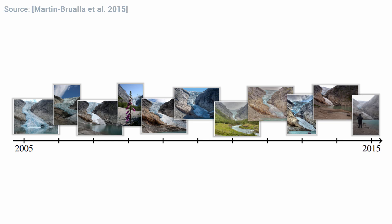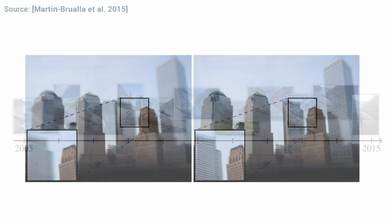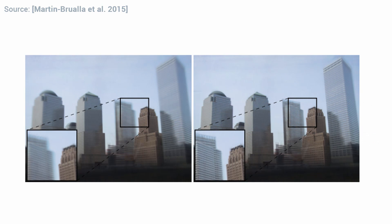Moreover, since these images are taken by cameras, different regions of the image may be in focus and out of focus. The algorithm therefore would have to somehow equalize all of the differences between these images and bring them to a common denominator. This process we call regularization, and it is a really difficult problem.